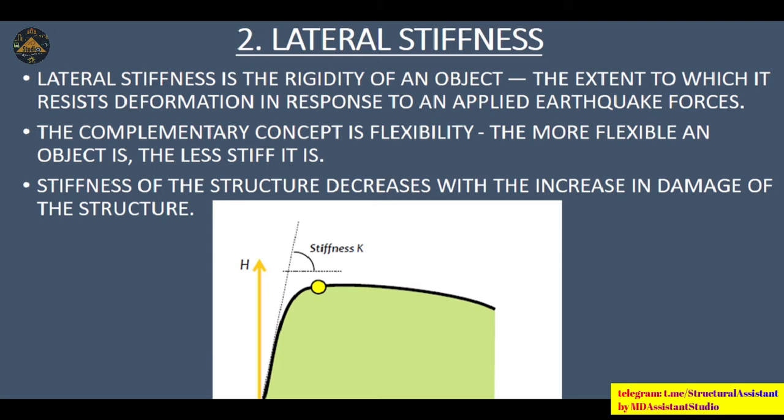The second concept is lateral stiffness. Lateral stiffness is the rigidity of an object — the extent to which it resists deformation in response to applied earthquake forces. Lateral stiffness is essentially the resistance of the structure to earthquake forces. The complementary concept is flexibility: the more flexible an object is, the less stiff it is, and vice versa.